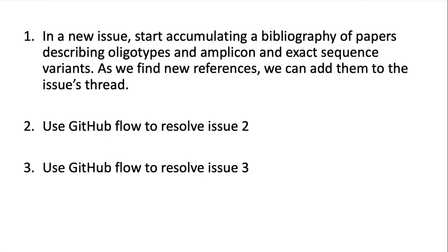I have a few exercises for you to work on to practice the skills we just covered. The first exercise asks you to create a new issue to keep track of articles, blog posts, tweets, or other resources describing the use of oligotypes, exact sequence variants, or amplicon sequence variants. The second exercise asks you to resolve issue two using GitHub Flow, and the third asks you to resolve issue three using GitHub Flow. Go ahead and pause the video now, work through these three exercises, and when you're done, come back and I'll share how I would do them.